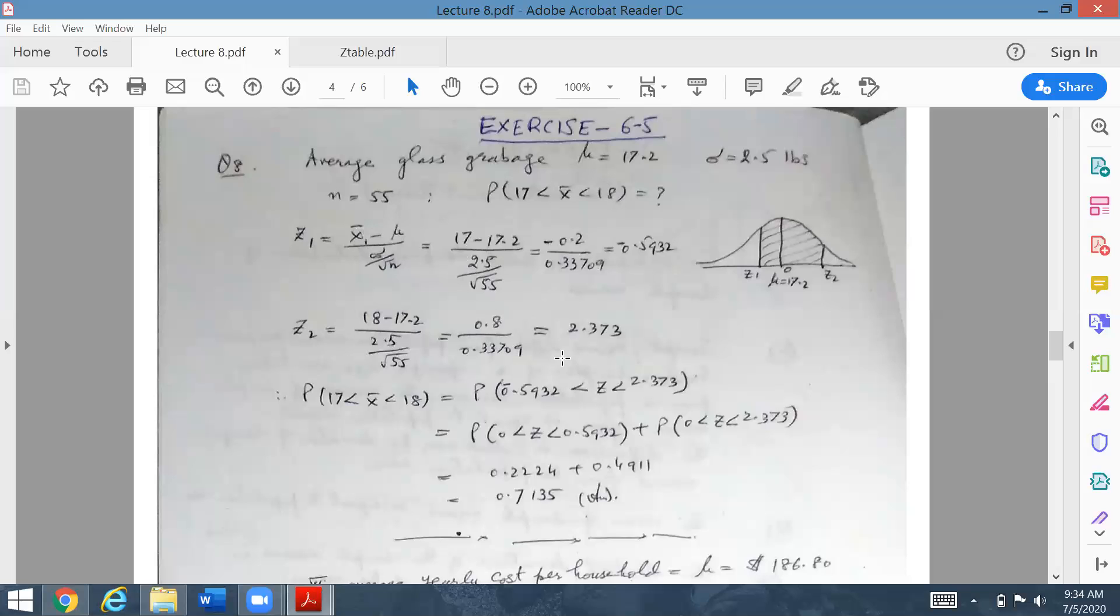So this is the z2 value. You have expressed all these x bar values into z. This value is z1, so you write minus 0.5932 less than z less than z2, which is 2.373.